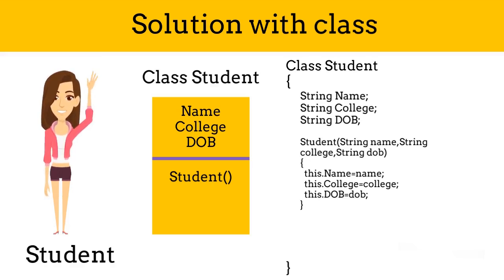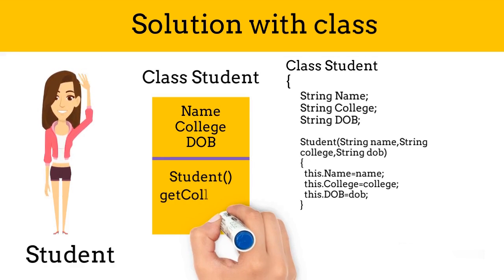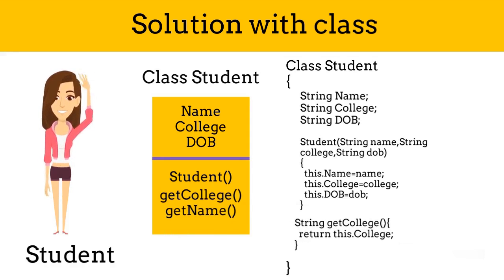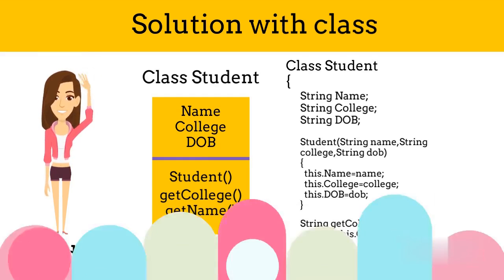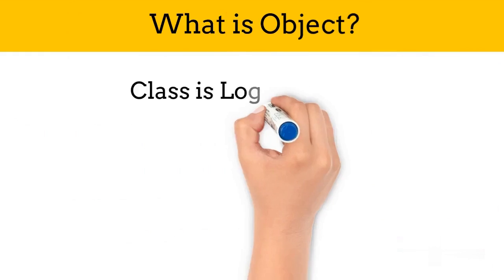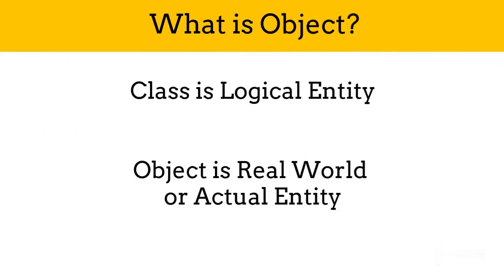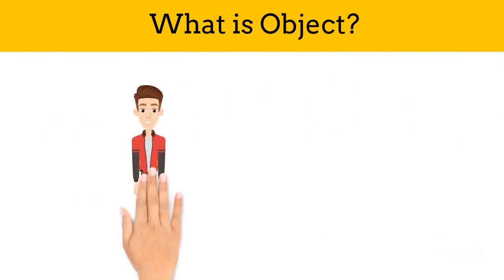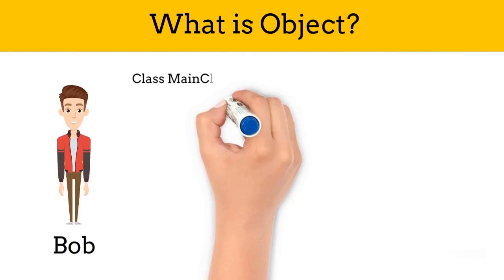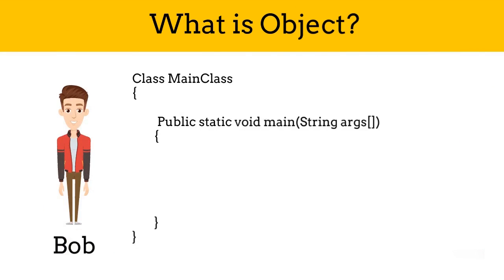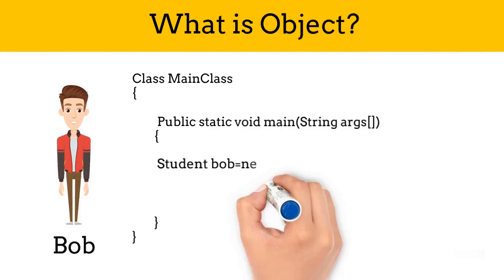Now we will add some functions to get the values of a variable. Our class is ready. You can see that a class is not an actual student, but it is just a data structure which will store the data of a student. Class is a logical entity but an object is an actual entity. Consider we have to store the data of a student Bob — then we will create an object of the Student class with the name Bob in our main method.